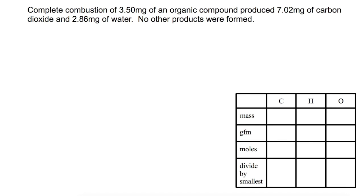Sometimes it is necessary to calculate the masses of the elements present before carrying out the empirical formulae calculation. This example shows how to do this. Complete combustion of 3.5mg of an organic compound produced 7.02mg of carbon dioxide and 2.86mg of water. No other products were formed. As this tells us no other products were formed, we know the compound must only have contained carbon, hydrogen and possibly oxygen. The first thing we are going to do is calculate the mass of carbon contained within the compound.